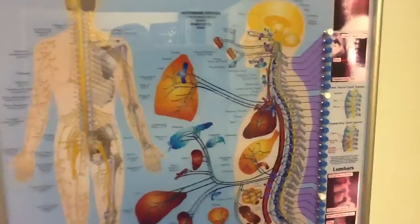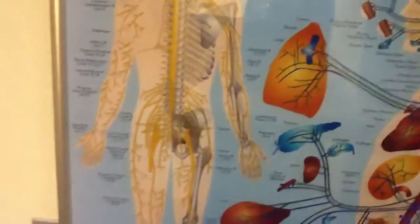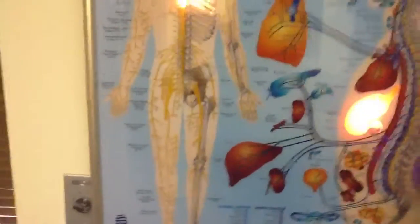We're now at the fifth thoracic vertebra - two, three, four, five - mid-back area.